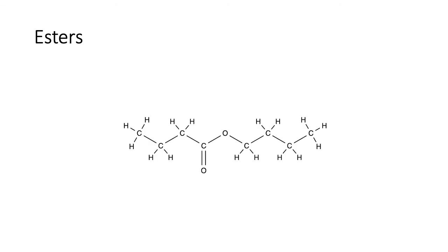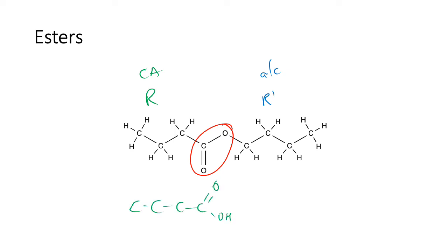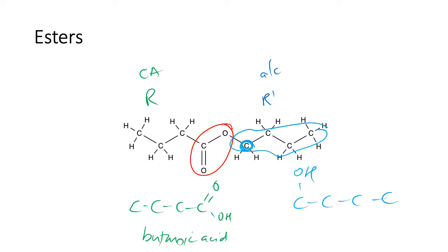Let's work out what reactants these esters came from. Here is the ester group — the R' side comes from the alcohol, and the R side comes from the carboxylic acid. The carboxylic acid would have 1, 2, 3, 4 carbons — making that butanoic acid. Then this side has 1, 2, 3, 4 carbons, and the carbon attached to the ester is the one that had the alcohol, so this is 1-butanol.